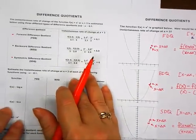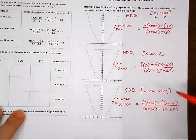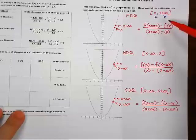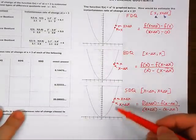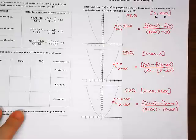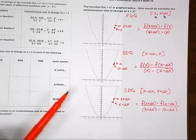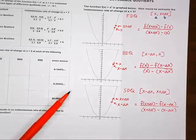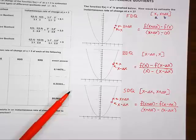Before we plug in numbers, I want you to talk to your table and think about which of the three difference quotients would give the best estimate of the exact slope at that one point. Which one do you think is most accurate — forwards, backwards, or symmetric?